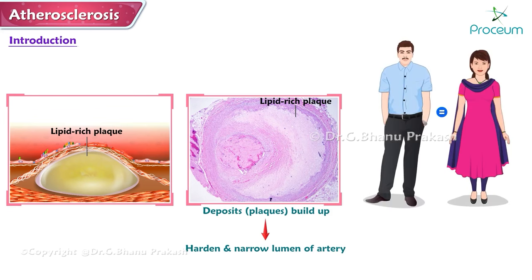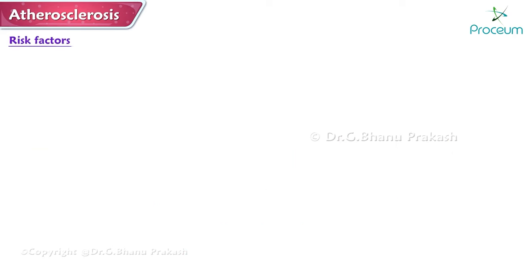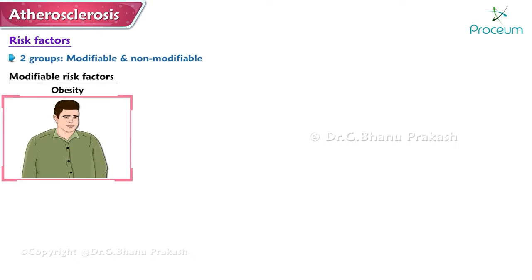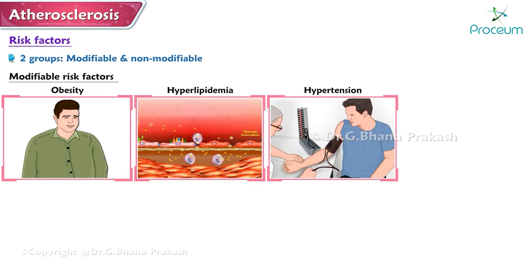Atherosclerosis is equal in distribution among males and females, but the Black race is more predisposed than whites. There are two groups of risk factors associated with atherosclerosis: modifiable and non-modifiable. Modifiable risk factors include obesity, hyperlipidemia, and hypertension.